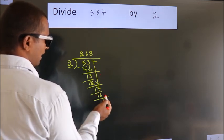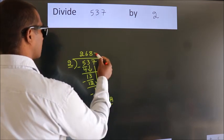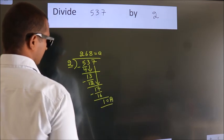No more numbers to bring down, so we stop here. This is our remainder. This is our quotient. This is our unit.